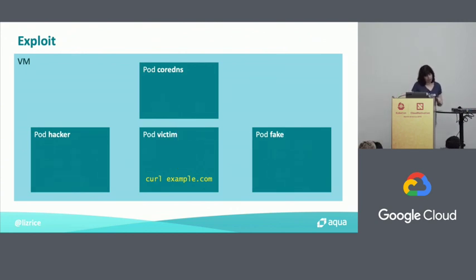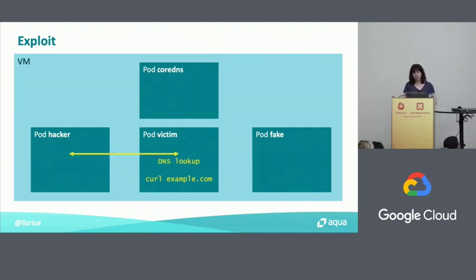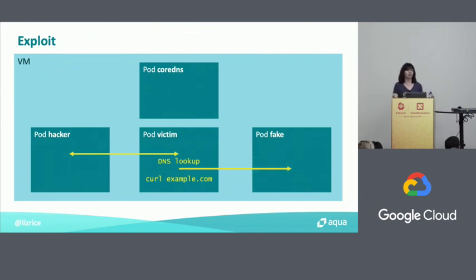When we have the exploit, the same thing is going to happen. The victim is trying to make a network request to example.com and will do the DNS lookup, but this time my hacker pod — which is spoofing DNS queries — will receive the DNS lookup request and redirect it to another pod I'm going to set up called fake.